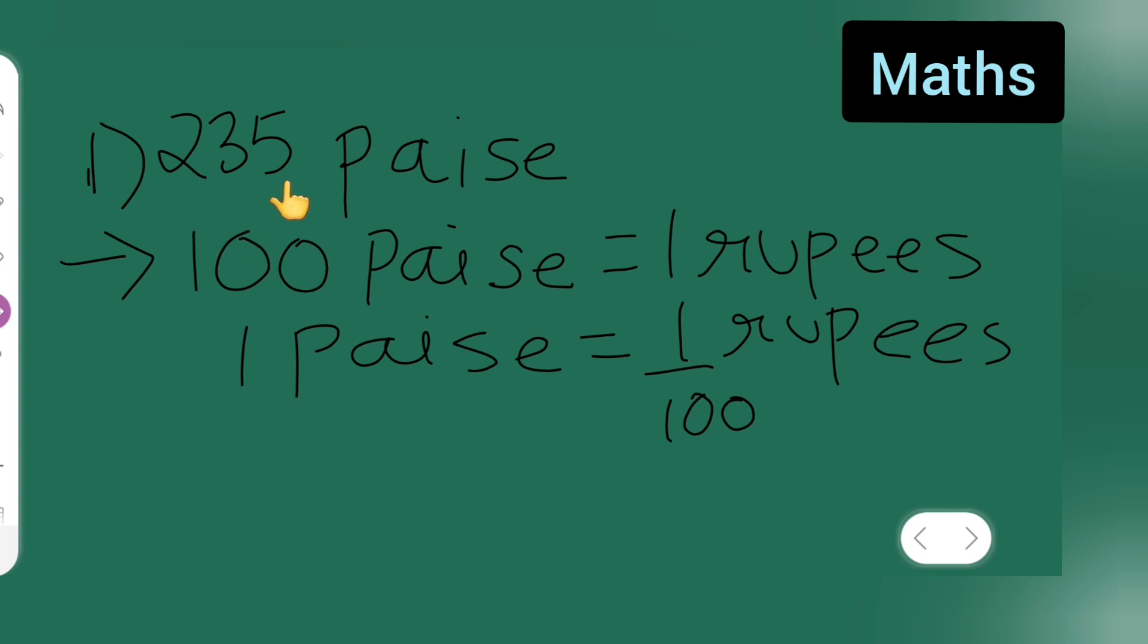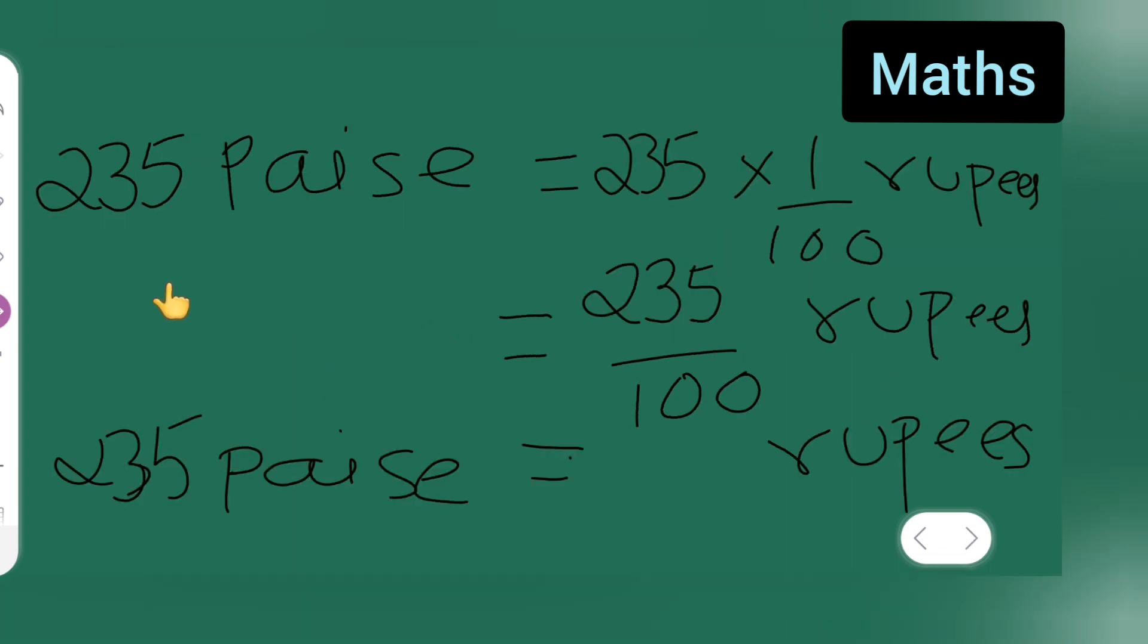235 paise. Now 100 paise, this is a basic conversion. Okay, now 100 paise is equal to 1 rupees. 1 paise is equal to 1 upon 100 rupees.